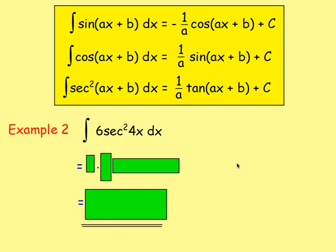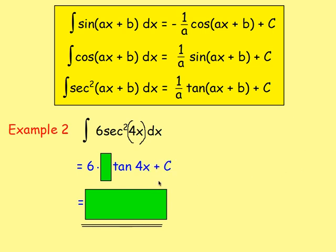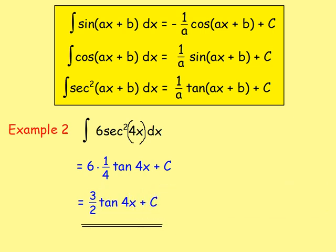Example two: integrate 6sec²(4x). You've got the six — leave the six as it is. Then integrate sec²(4x), imagining brackets around the 4x. Sec² integrates to tan, so you'll have tan(4x), plus c. But you need to divide by the derivative of what is in the brackets. Differentiate that, you get four. So divide by four, or multiply by a quarter. Six times a quarter gives six quarters, which simplifies to three halves. So the answer is (3/2)tan(4x) + c.